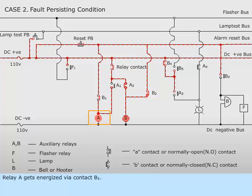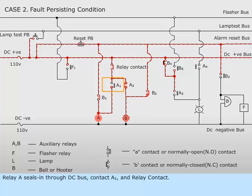Relay A gets energized via contact B sub 1. Relay A seals in through DC bus, contact A sub 1, and relay contact.